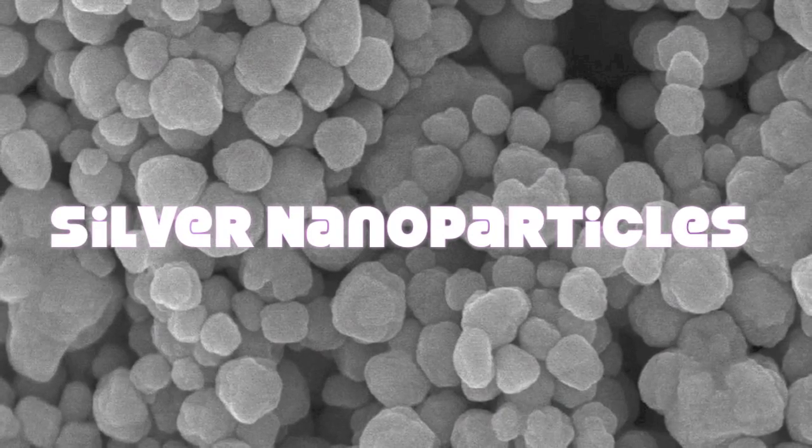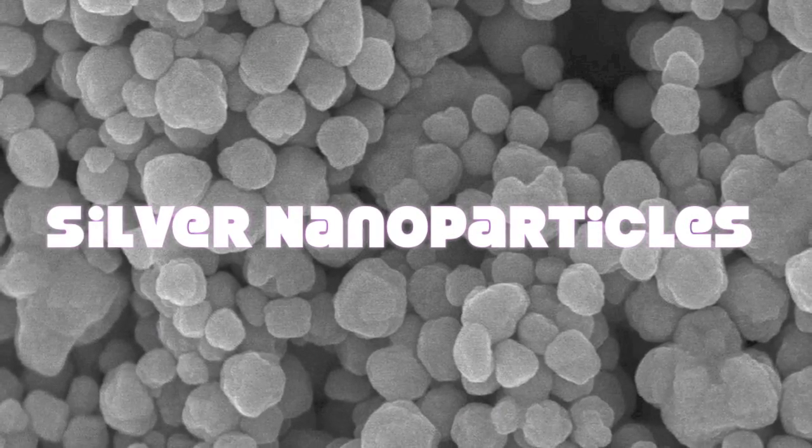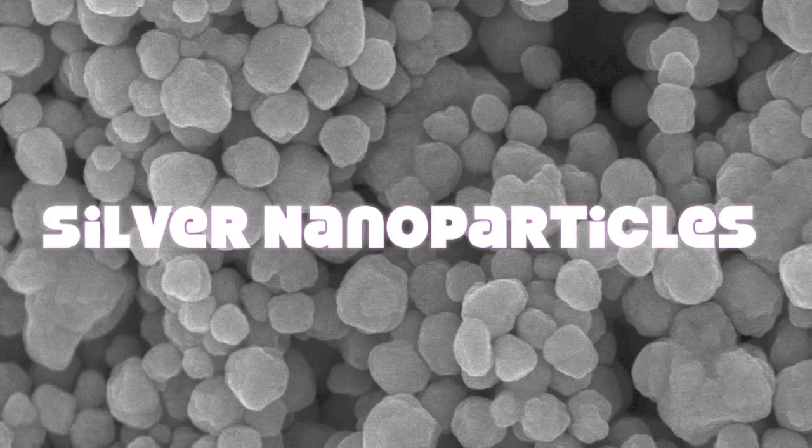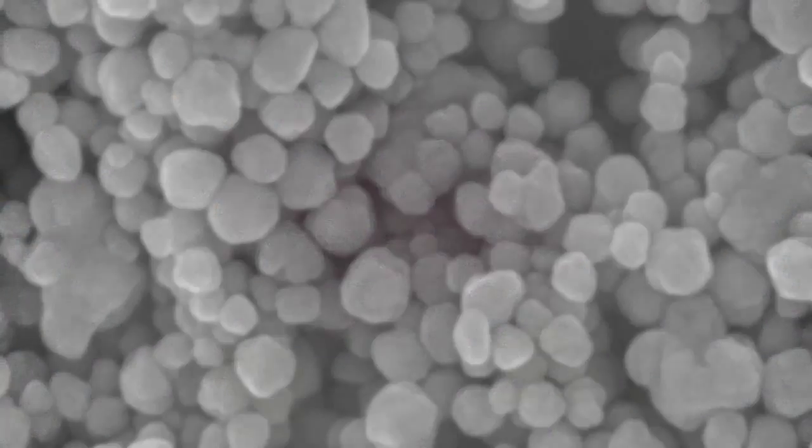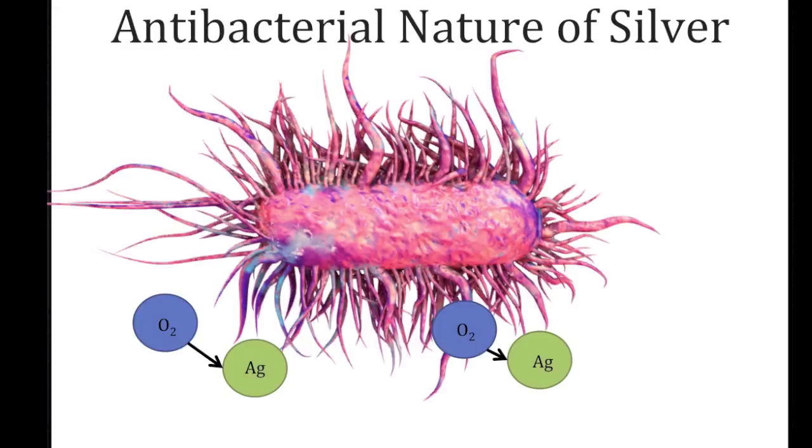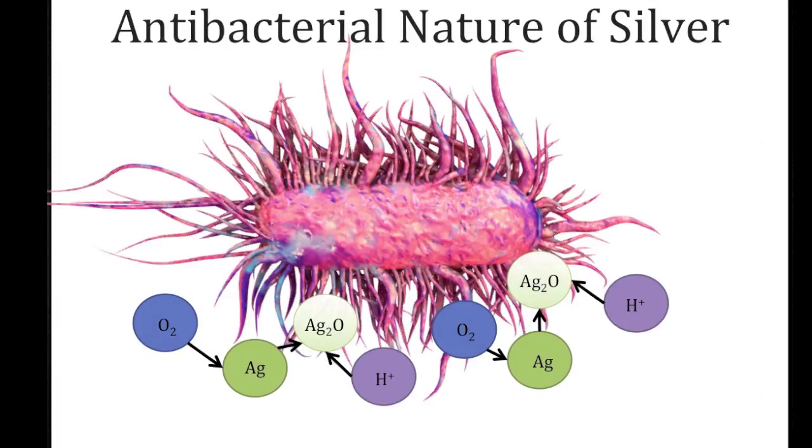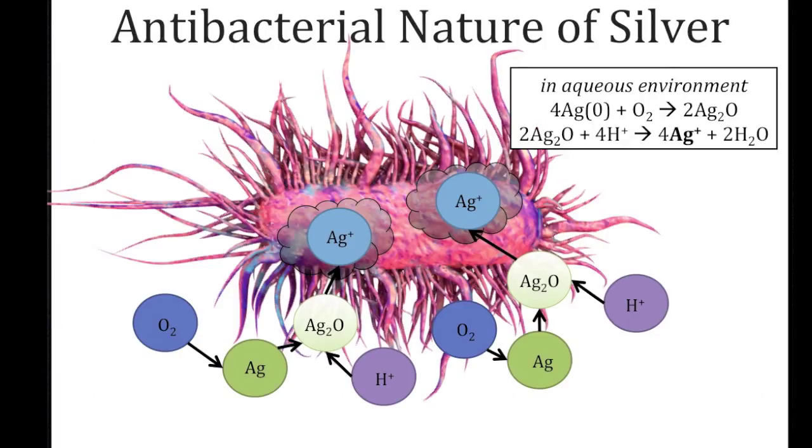Silver nanoparticles were the main part of our project. They kill a wide array of bacteria, can be easily tailored for different sizes and dispersion, making them very effective for this application. The silver is oxidized with oxygen from the air to form silver oxide. This then interacts with hydrogen normally found in the aqueous environment to form silver ions which result in cell lysis or the degradation of the cell membrane, killing the bacteria.